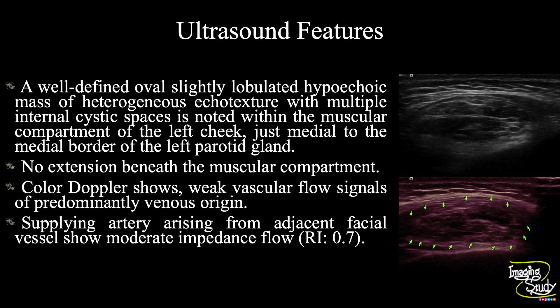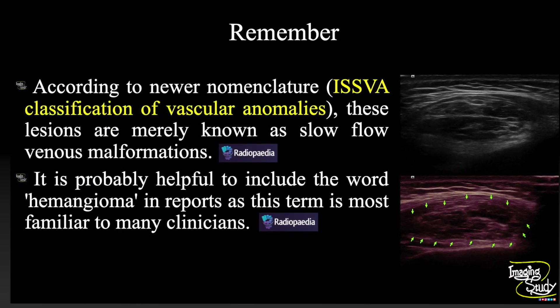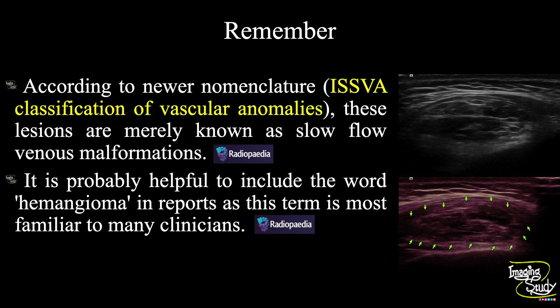The take-home message: according to the newer nomenclature — that is the International Society for the Study of Vascular Anomalies (ISSVA) classification of vascular anomalies — these lesions are more accurately known as slow-flow venous malformations. However, it is probably helpful to include the word hemangioma in your report, as this term is most familiar to many clinicians.